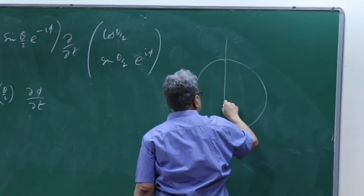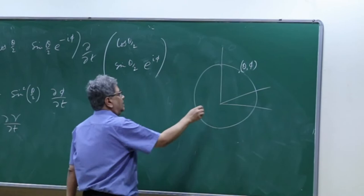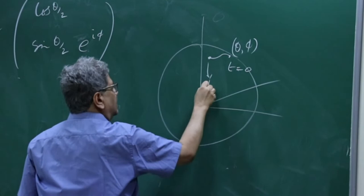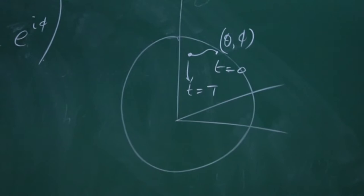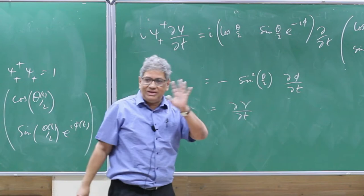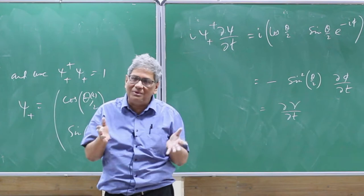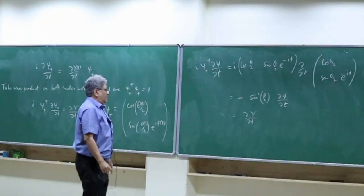At this point it is useful to draw a picture. We are using polar coordinates on a sphere. The point (θ, φ) varies in time, going from t=0 to t=T. Notice that the magnitude of B does not matter at all — only θ and φ are important. So it does not depend on the magnitude of the magnetic field, only on the direction and how it changes in time.